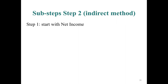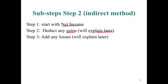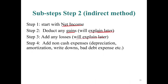The five sub-steps: Step one, start with net income. Step two, deduct any gains (I'll explain why later). Step three, add any losses. Step four, add any non-cash expenses such as depreciation, amortization, and bad debt expense. When you book depreciation expense, you debit depreciation expense $15,000 and credit accumulated depreciation $15,000 — no cash is credited, so it's a non-cash expense.